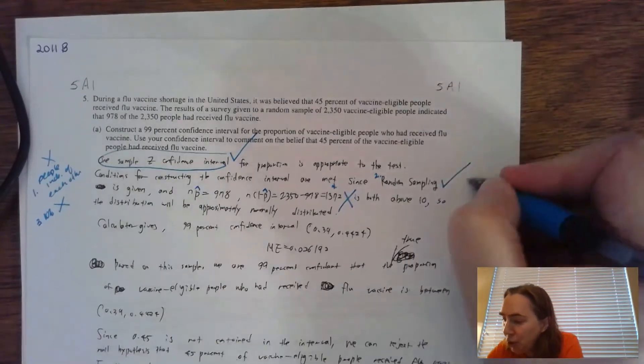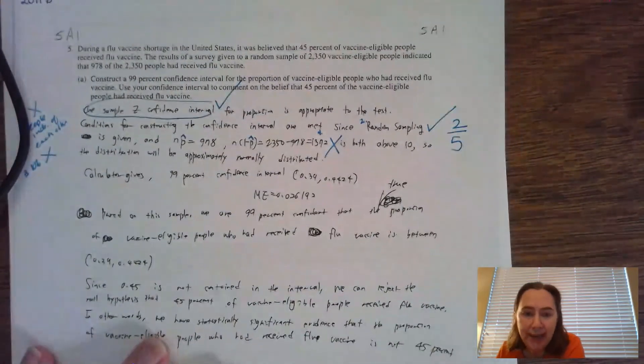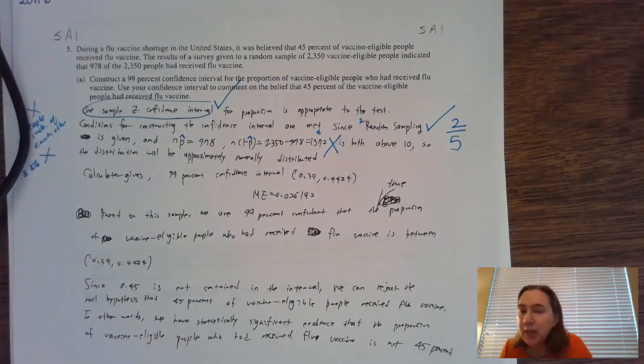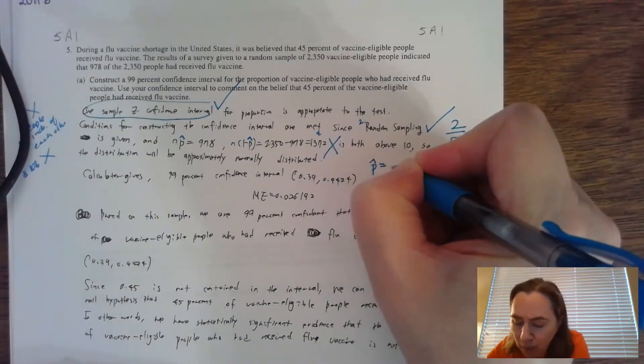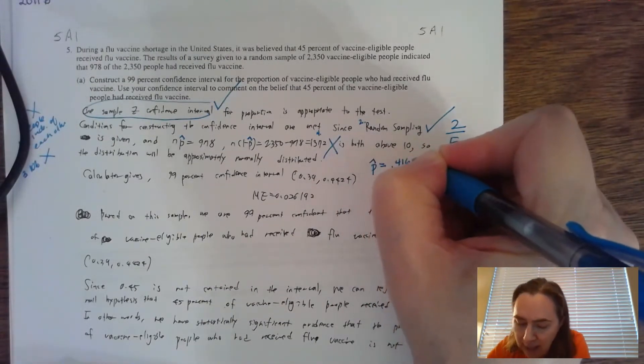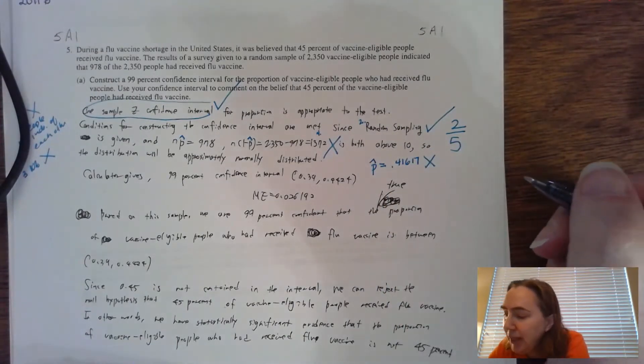I see that right up here, so I'm going to give them their fifth check on this particular part. For conditions and a since statement, my person got two out of those five. Now we're going to move directly to the mechanics. The mechanics are going to be done totally on the calculator since we named the test.